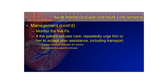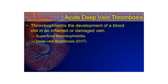Transport rapidly to the closest facility and reassess the patient's condition frequently en route, monitoring the five P's. If the patient refuses care, repeatedly urge them to accept assistance including transport — this condition can become much worse. Consider contacting medical direction for advice, and document the refusal thoroughly if they decline despite your efforts.